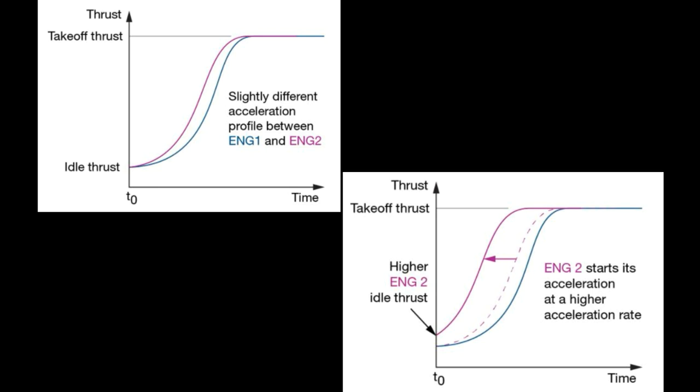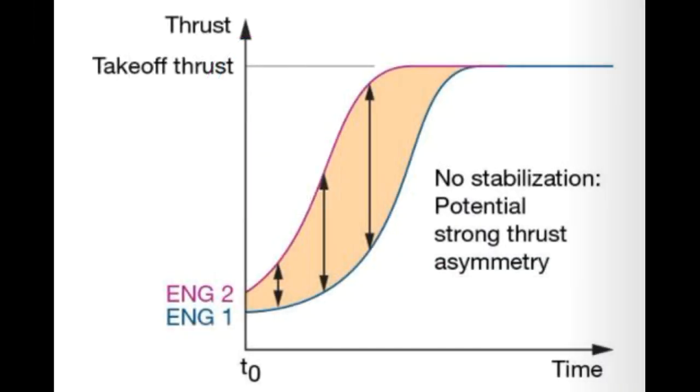In figure 3, we can see the differing acceleration profiles between two comparable engines with the idle at the same point. In figure 4, this is slightly different where the idle is slightly differing between the two engines. Figure 3 shows two similar engines with a similar idling point and a slightly different profile for the acceleration. Figure 4 shows a slightly higher idle gives an earlier acceleration profile. And figure 5 shows what happens when you don't give the engines the opportunity to stabilize and can produce very different acceleration profiles, giving quite a strong asymmetric thrust condition, difficult to counteract and a likely cause in this particular case.